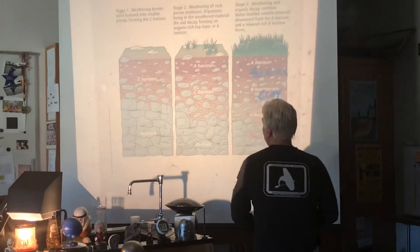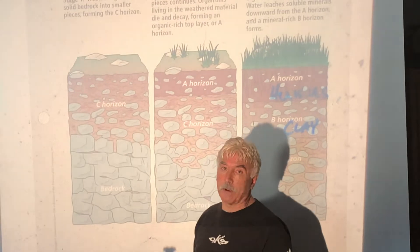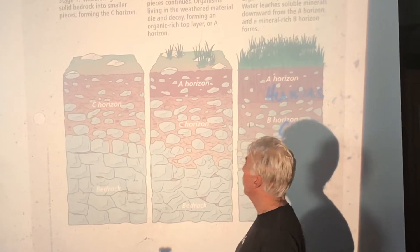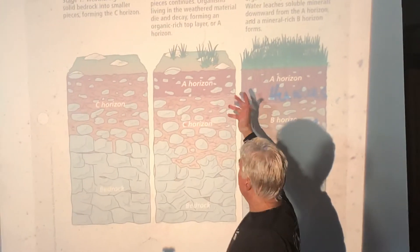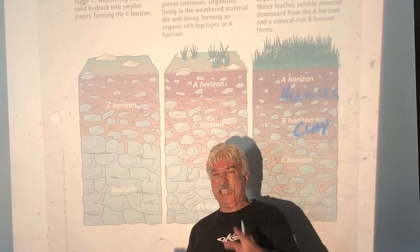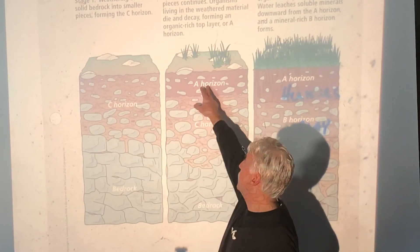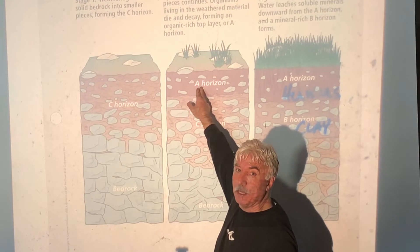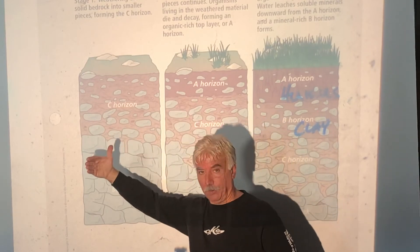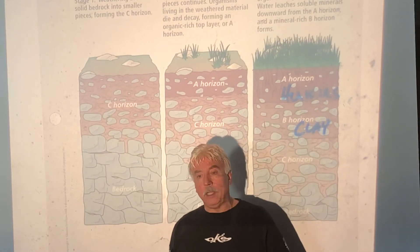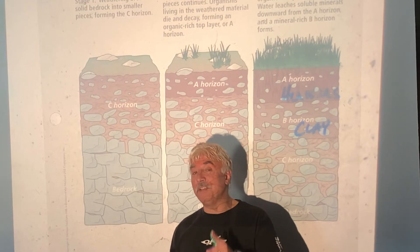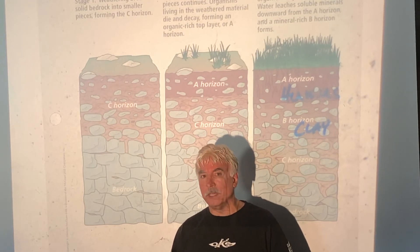Soil starts off as just a bunch of broken-up rocks — we call that the C horizon. And a horizon is like a layer. Then what starts to happen is you get an A horizon — the biological activity zone with organisms, feces, and bodies — and that's when you start to get what we call soil. In fact, some people might call it topsoil. In science, we've got a better word for it — it means decayed vegetative material. We call it humus.